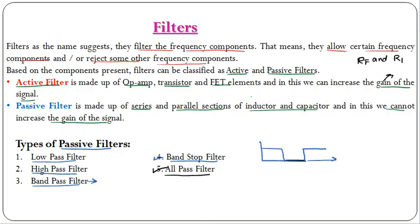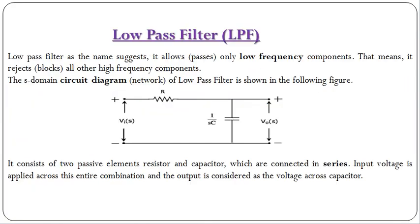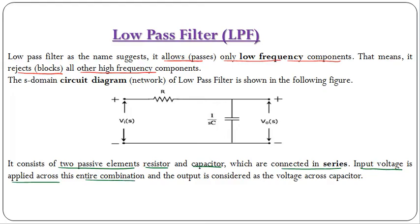First we will see the low pass filter. As the name suggests, it allows only low frequency components and rejects or blocks all high frequency components. As it is a passive filter it consists of only resistors and capacitors. In the low pass filter circuit we have a series combination of resistor and capacitor. Input voltage is applied across the entire combination and the output is taken as the voltage across the capacitor.